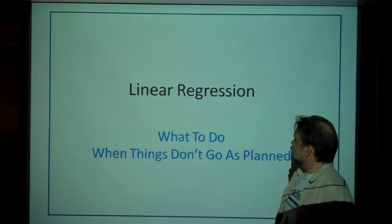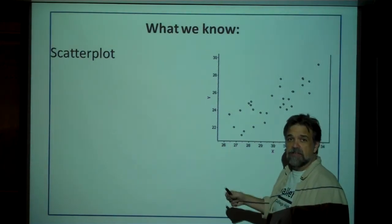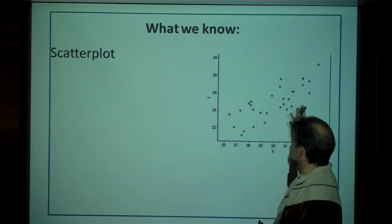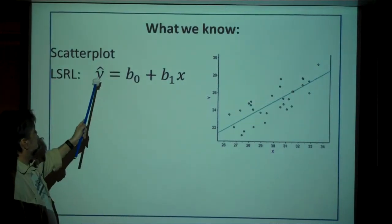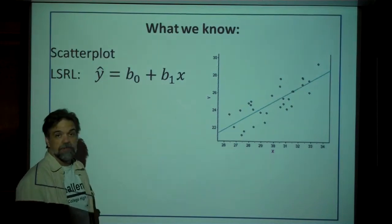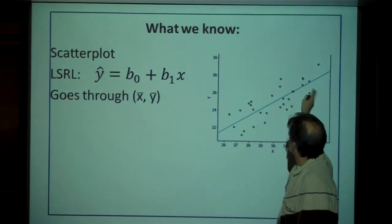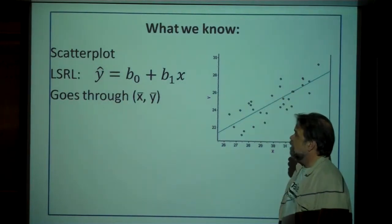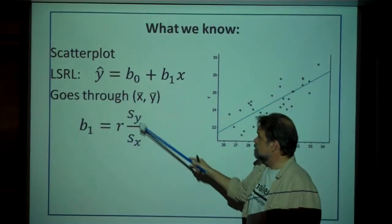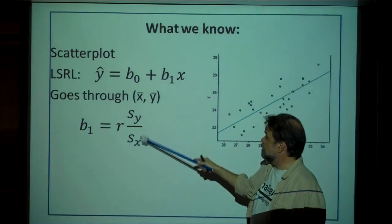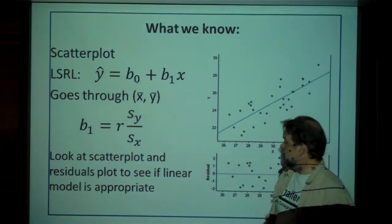First, let's look at some things we already know. If you have bivariate data — two quantitative variables — you can make a scatter plot, and you can figure out your least squares regression line: y-hat equals b-naught plus b1·x, where b-naught is the y-intercept and b1 is the slope. That line goes through the point x-bar, y-bar — the mean of your x data and the mean of your y data. If you know your correlation coefficient and the standard deviation of your response and explanatory variables, you can calculate your slope.